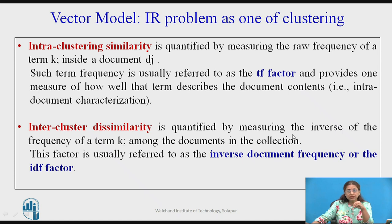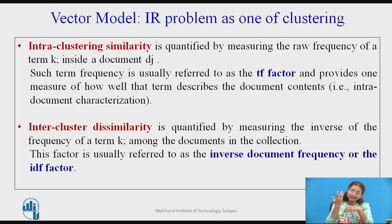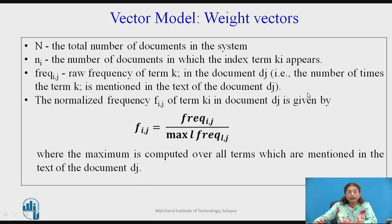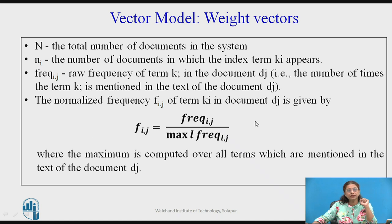Inter-cluster dissimilarity measures the inverse of the frequency of a term among the documents in the collection — in how many documents it is present out of the collection; taking its inverse gives inter-cluster similarity. For example, out of 10 documents, if a keyword occurs in 7, then in 3 it is not occurring — that is inter-cluster dissimilarity. Now, how to calculate the weight vectors: n is the total number of documents in the system, ni is the number of documents in which index term Ki appears, frequency_ij is the raw frequency of term Ki with respect to document Dj, and normalized frequency is obtained by dividing raw frequencies by the maximum frequency.